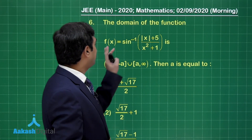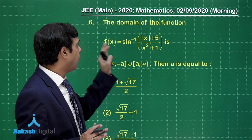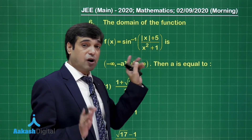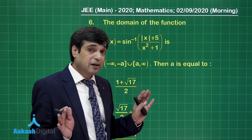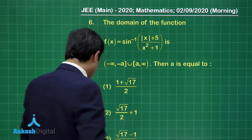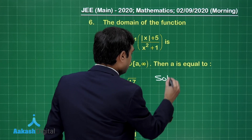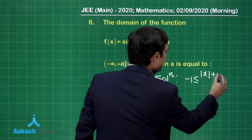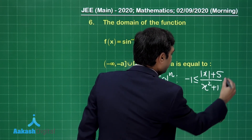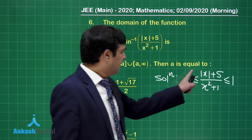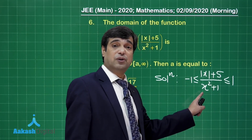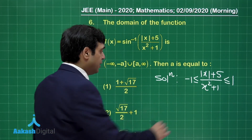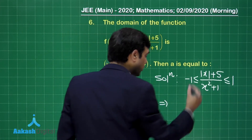Question 6: find the domain of the function sin⁻¹[(|x| + 5) / (x² + 1)]. For sin⁻¹ to be defined, the argument must lie between minus one and one. So we need minus 1 ≤ (|x| + 5)/(x² + 1) ≤ 1. Since the quantity is always greater than zero, the left inequality is automatically satisfied. We only need to solve (|x| + 5)/(x² + 1) ≤ 1.